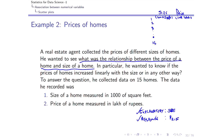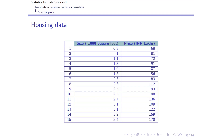We want to know whether the prices of homes increase linearly with size. First let us look at the data: 15 homes have been recorded. For example, an 800 square foot house costs 68 lakhs, a 1000 square foot house costs 81 lakhs, 1100 square feet costs 72 lakhs, and 3400 square feet costs 170 lakhs. On the x-axis we take the size; on the y-axis we take the price, and we plot a scatter plot.